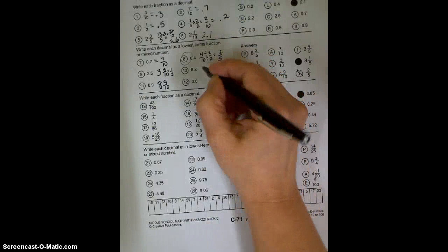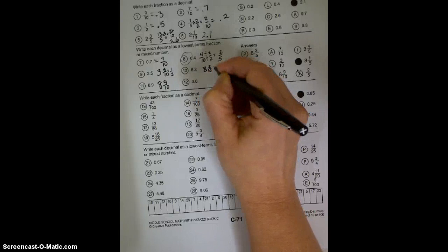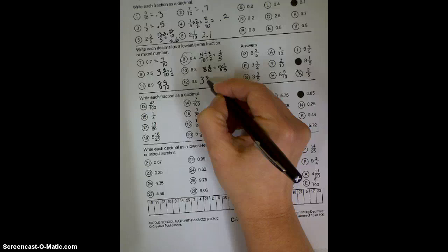This one has a mixed number, 8 and 2 tenths, which could be reduced if you divided them both by 2, to 8 and 1 fifth. 3 and 8 tenths, if you divided them both by 2, would be 3 and 4 fifths.